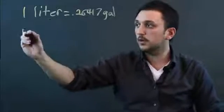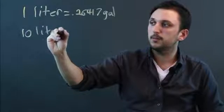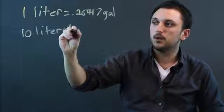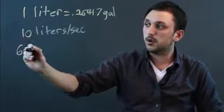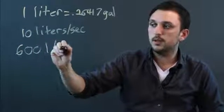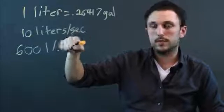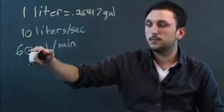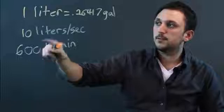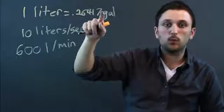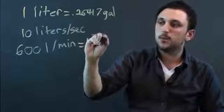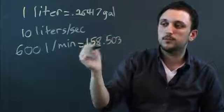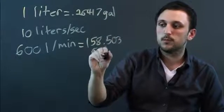Now if we want to do liters per second, let's say we're going 10 liters per second. So that would be like about 600 liters per minute because there's 60 seconds in a minute, so we have to multiply 10 by 60. And in that case, we're going to have to multiply .26417 by 600, which equals 158.503 gallons per minute.